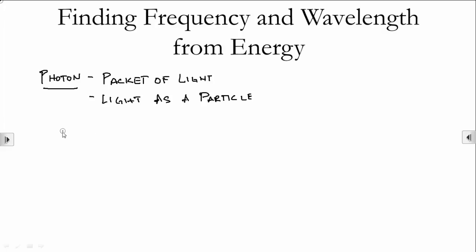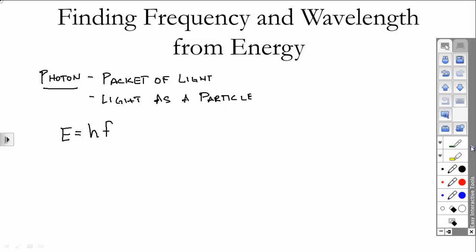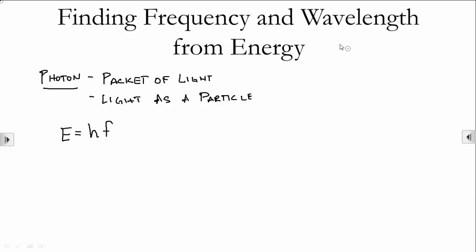This particle has energy. The energy of that particle is given by something called Planck's constant, which is h times the frequency of light. Because a photon is so small, we're going to measure energy in tiny, tiny units. So we're going to measure energy in something we call electron volts.